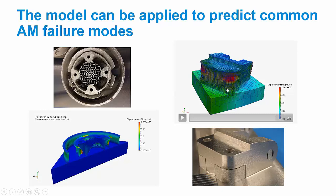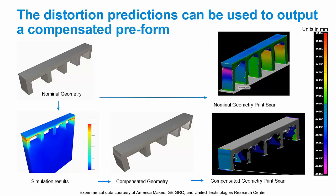Another useful output from Netfab Simulation is compensated preforms. The idea behind distortion compensation is that if you have a preform representing what you want to come out of your machine, that's probably not what you want to feed into the machine to get that result — because the simulation can tell you that you're going to get some pretty severe distortion. We can use those distortion predictions to offset the preform so that once it distorts, you actually get the shape you want. We've actually built these parts: the nominal geometry produces visible distortion in certain regions, but when built using the compensated preform, you get much less distortion along that interface.